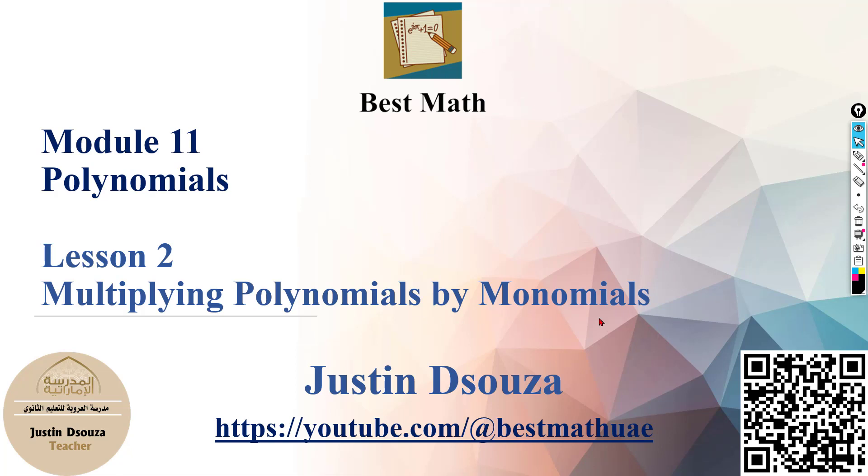Now this is a very simple lesson if you know what is a polynomial, a group of monomials, that is being multiplied with monomials basically. Monomial is a single term. Now like this, this is a monomial. You will have to multiply this with something like this. It's very simple. All you need to do is distribute your property, distribute this to both of these terms and then solve it.